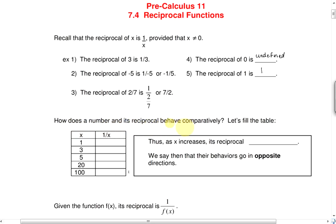So how does a number and its reciprocal behave comparatively? Let's fill out the table comparing x with 1 over x. If x is 1, then 1 over 1 is 1. If x is 3, we get 1 over 3, or 0.3 repeating. If x is 5, we get 0.2. If x is 20, we get 0.05. And if x is 100, we get 1 over 100 or 0.01.